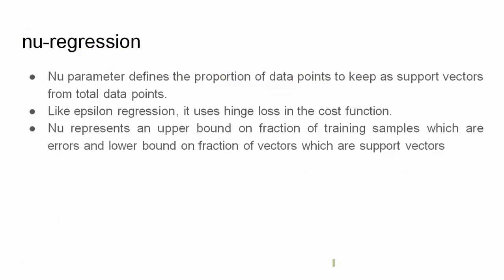Next is nu regression. It has proportionality of the data points which can be termed as the number of support vectors. Like epsilon regression, it uses hinge loss in the cost function. Both epsilon and nu regression use hinge loss in the cost function.